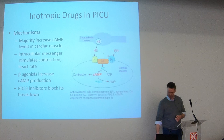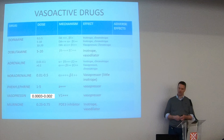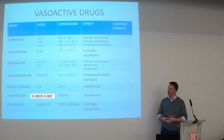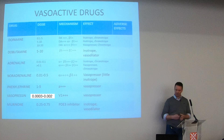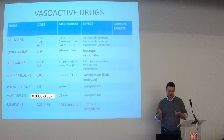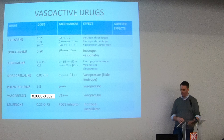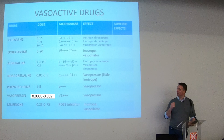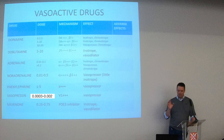No talk about inotropes is complete without a table with lots of alphas, betas, pluses and minuses. The dopaminergic receptors are actually irrelevant to blood pressure control - that's because I don't like dopamine as a drug and I'll come to that in a moment. These drugs all work by messing around with G proteins and receptors in your cardiac muscle, essentially increasing the amount of cyclic AMP, which increases contractility either by boosting its production or inhibiting its breakdown.